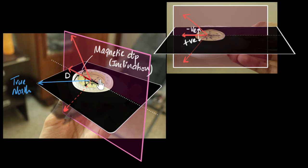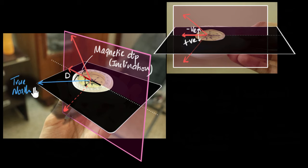Now comes the most important question: why should we care about magnetic dip? Declination, for example, is super useful for navigation — with the declination value and a compass, you can figure out where the geographic North Pole is to course correct yourself. But what about magnetic dip? Where would that be useful? Well, there are multiple uses for it.